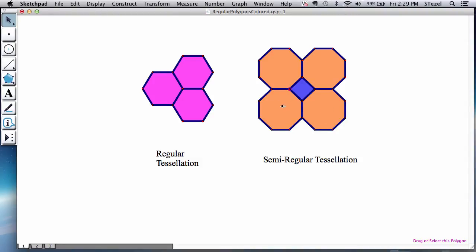But in this case it doesn't use just a single type of polygon. Here you have two octagons and then a square together making up and leaving no space around that point. That's called the semi-regular tessellation.